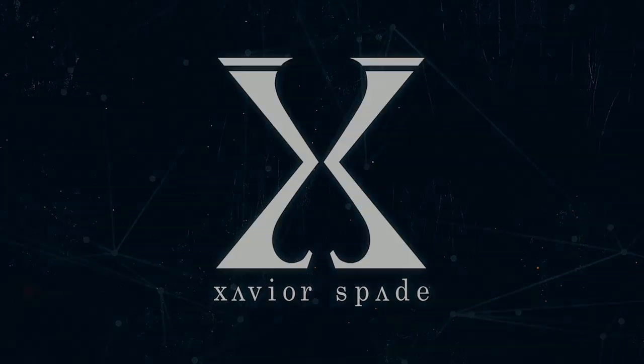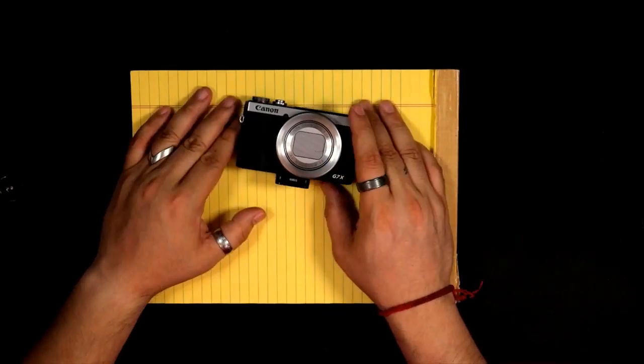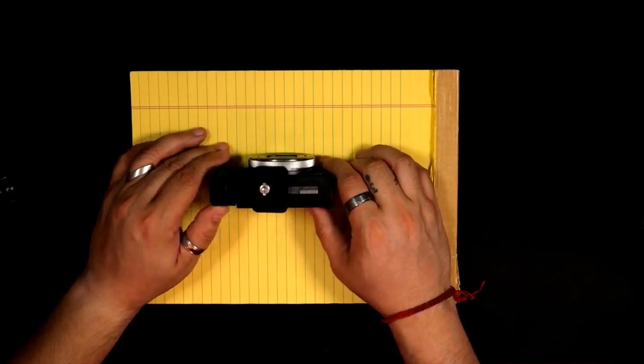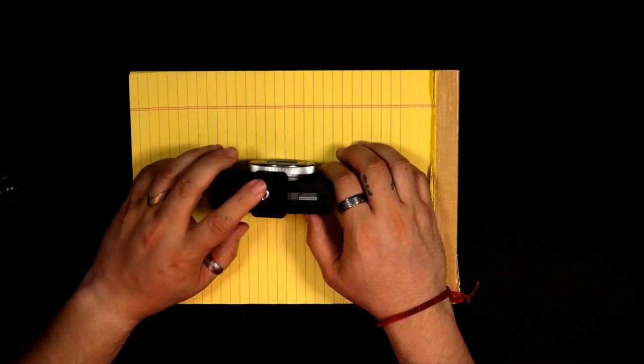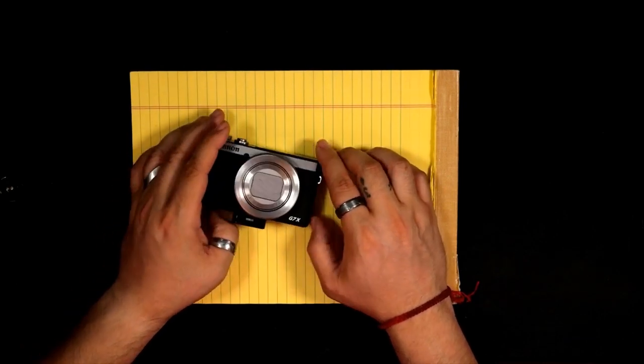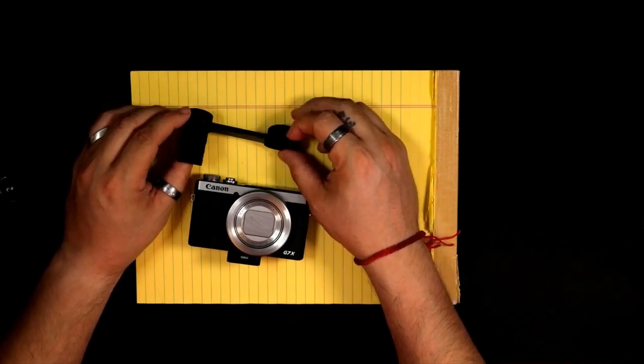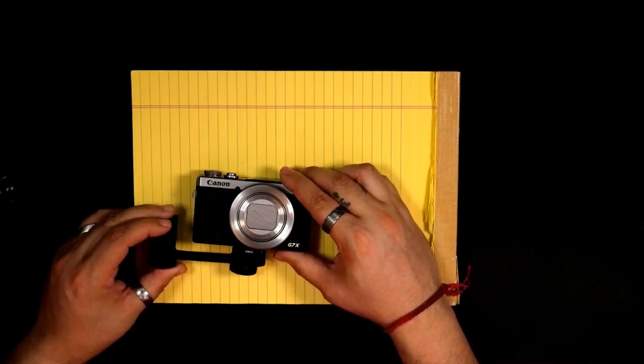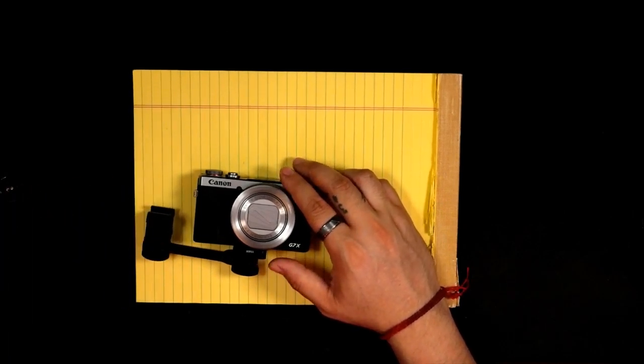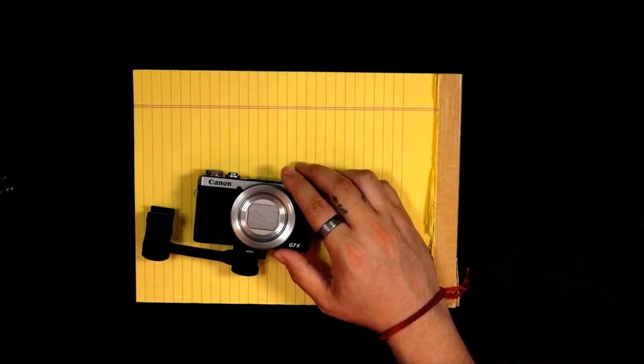Okay, so this is the G7X. I have my little quick release on there already. I tried a few things - I had this mount, and I could put it there and then put the microphone right on it. This is the microphone I was using, the Rode Video Micro.